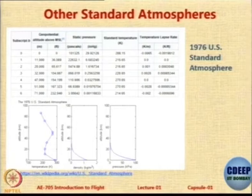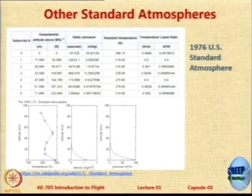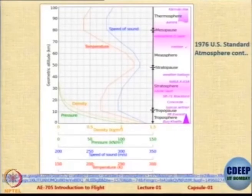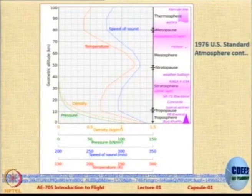The sea level temperature in the US atmosphere could be the same but there are subtle variations. Let us look at the chart again — this is the variation of pressure, density and temperature for the US standard atmosphere.